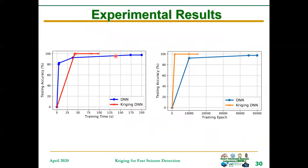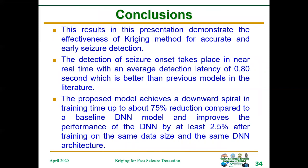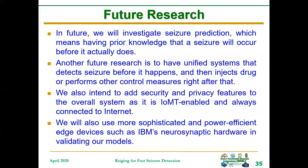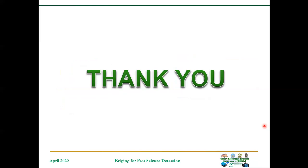These plots show the improvements in training time and training epoch. Comparing with other models, we see that our proposed model achieves a very low latency of less than one second, and an accuracy and sensitivity of 100%. This is the conclusion. Future directions are also outlined, along with the references used in this work. Thank you.